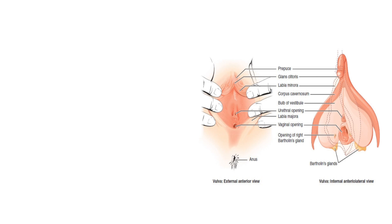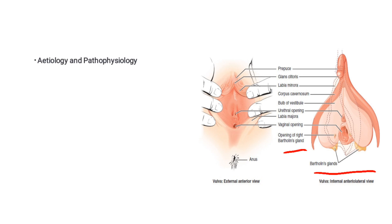You have to know the external anterior view and also the internal anterior view of the vagina. As you can see here, we are going to concentrate on the Bartholin's glands — that is where the Bartholin's glands are. That is where the opening of the right Bartholin's gland is, and on either the left or right side, that is where the cysts or abscess can occur.